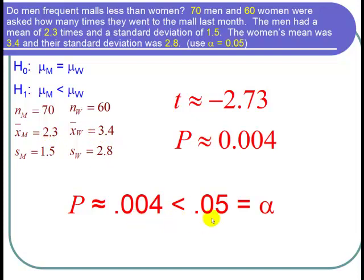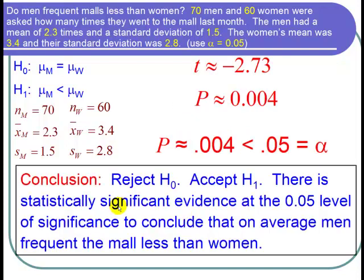So it's very unlikely that we would get the men's mean to be so different from the women's mean, so unlikely, so much less than 0.05, that we can reject the null hypothesis and accept the alternative hypothesis. And we can conclude that we reject H0, accept H1, and that there is statistically significant evidence at the 0.05 level of significance to conclude that on average, men frequent the mall less than women. And I'm done with the problem.